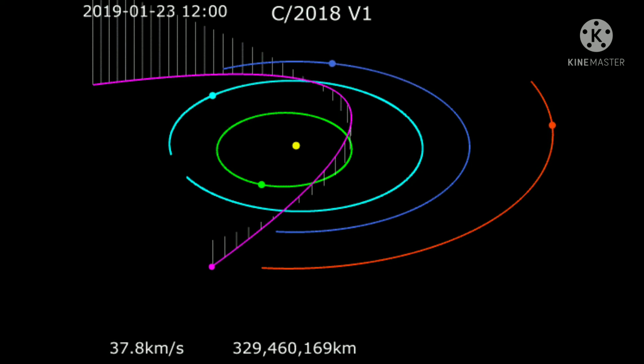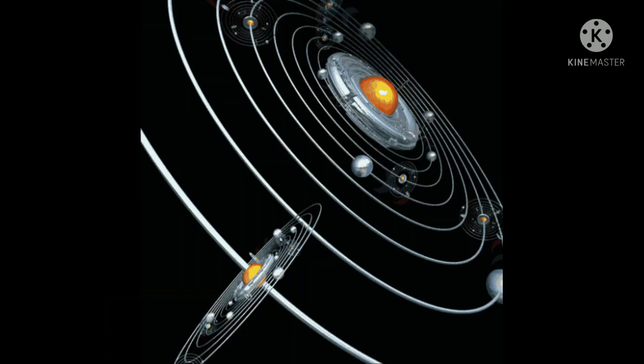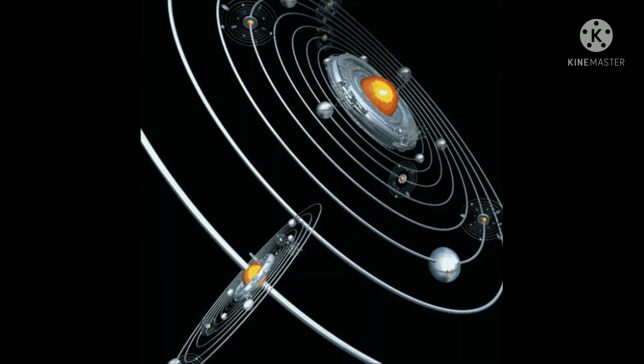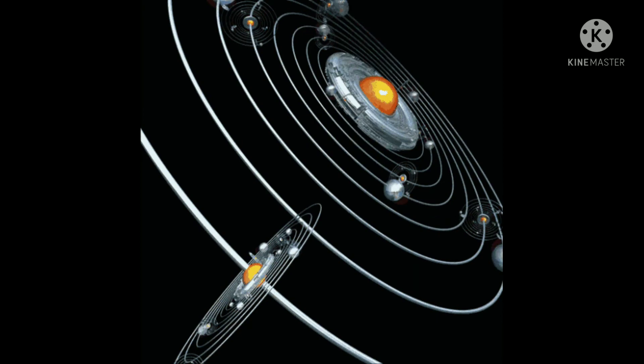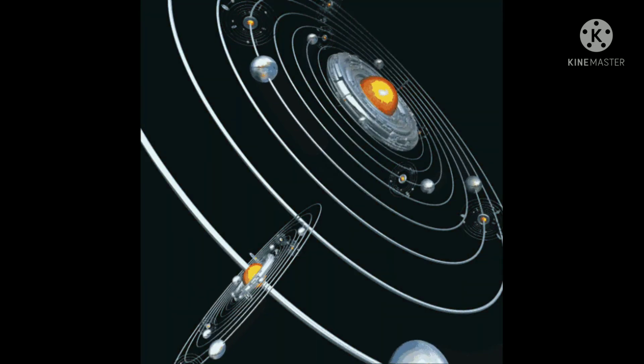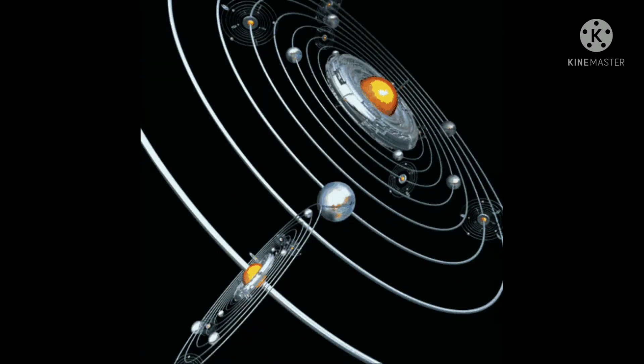Kepler's law of planetary motion. Planetary motion had been observed by astronomers since ancient times. Before Galileo, all observations of the planet's positions were made by naked eyes.